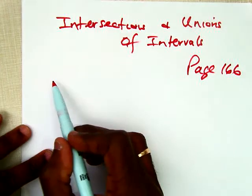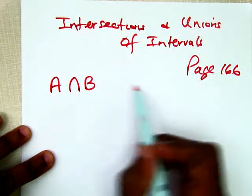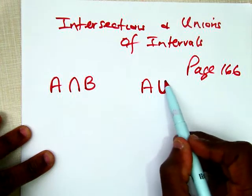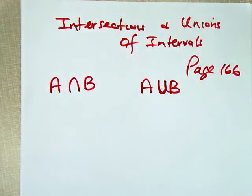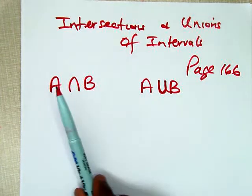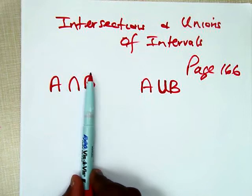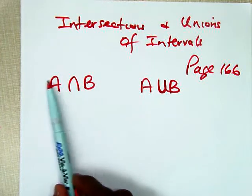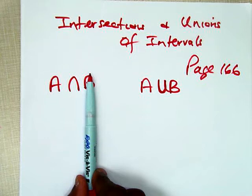What does this symbol mean? This symbol means intersection. What we're asking you to do is list all the members of set A that are also in set B. This is A into set B — everything that's in A that is also in B would be the solution set.